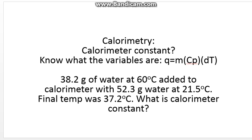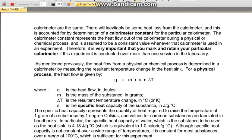You also need to know how to do a basic calculation. So in this example I'm going to do here is we are going to do 38.2 grams of water at 60 degrees. It's added to a calorimeter with 52.3 grams of water at 21.5 degrees C. And the final temperature is given. So what is the calorimeter constant? Let's go ahead and solve this problem.